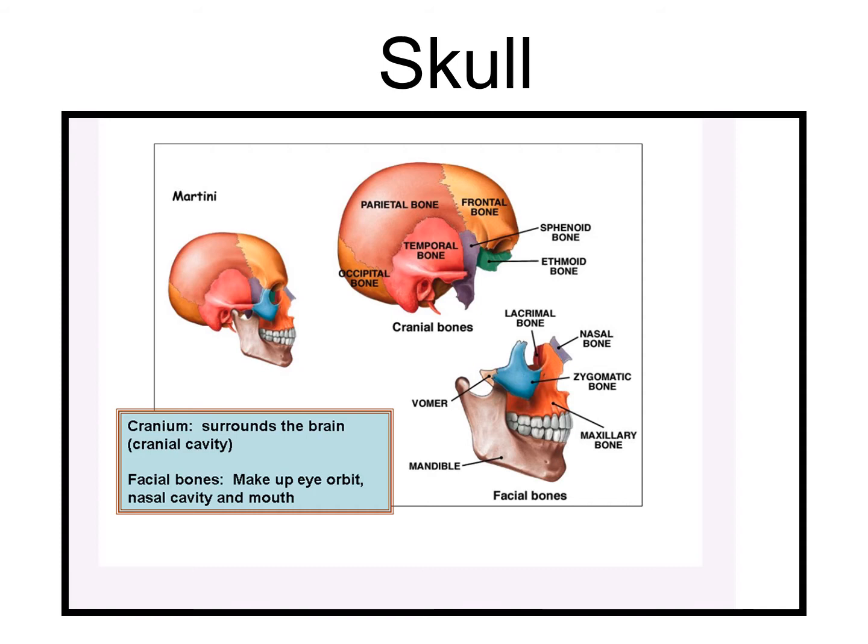Your skull is not one large bone. It is composed of many bones, and many of those bones are actually paired. We can subdivide those bones into two general types: the cranial bones, which surround the cranial cavity where your brain is located, and then you have the facial bones.